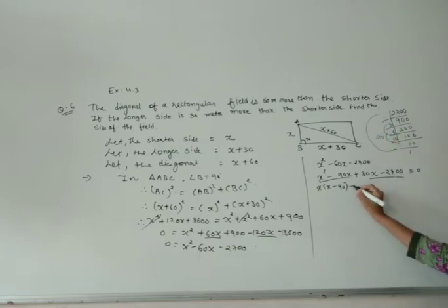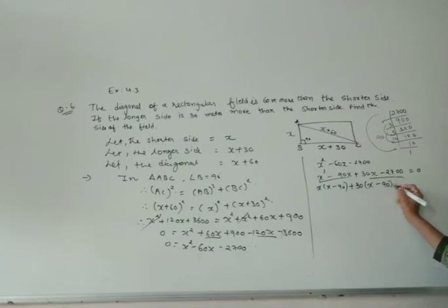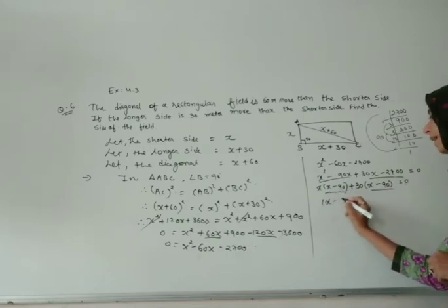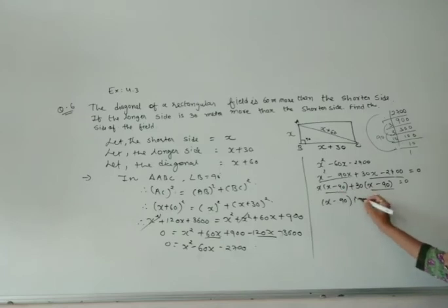If we are taking 30 common from both, what will remain? 90 will remain. If I am taking 30 common, 90 will remain. If the two brackets are the same, write in one bracket and write the rest in another bracket, and that equals 0.